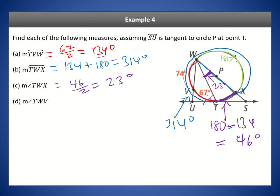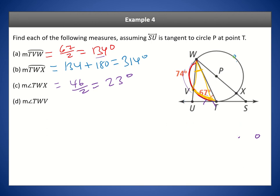Finally, for angle TWV, we need the arc TV. The entire red arc TVW is 134 degrees, and we can subtract 74 from it to get arc TV: 134 minus 74 is 60 degrees. Since the orange arc is 60 degrees, we divide by 2 by the inscribed angles theorem to get angle TWV, which is 30 degrees.